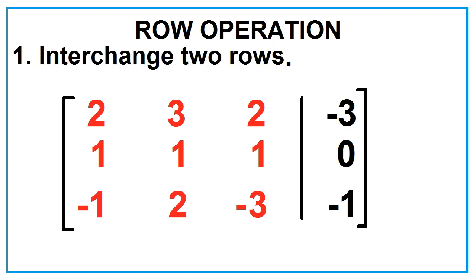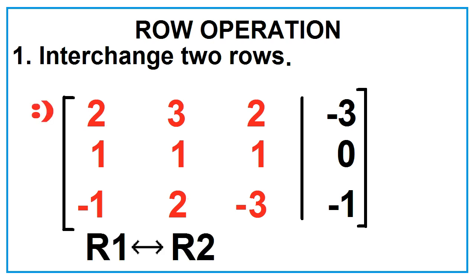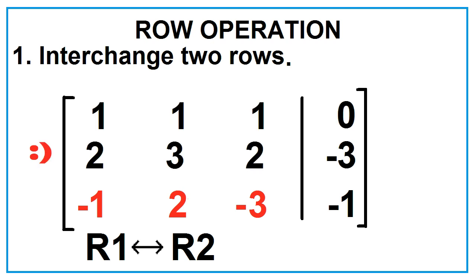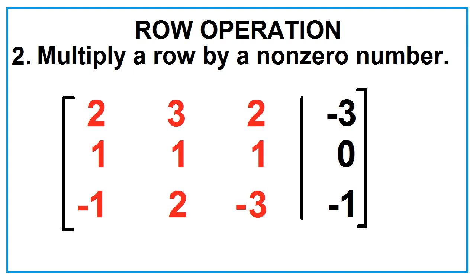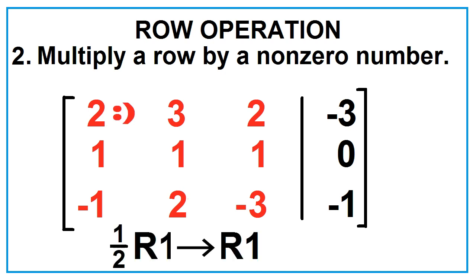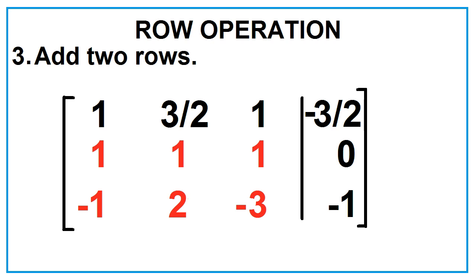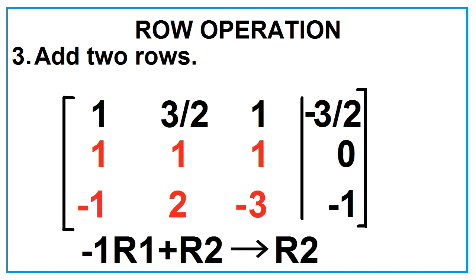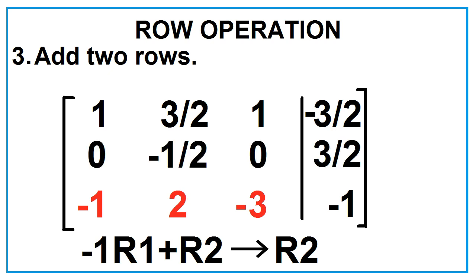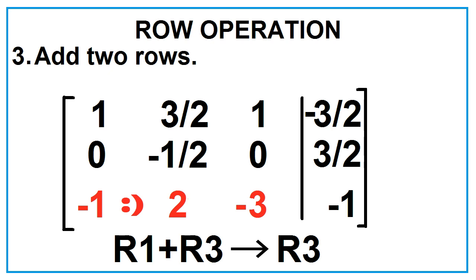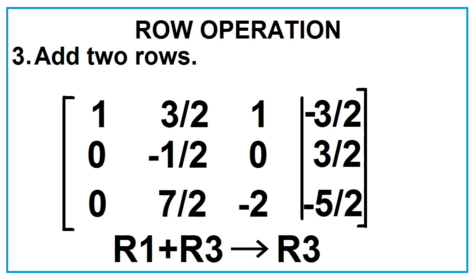Number 1: Interchange two rows. To make the entry of row 1, column 1 equal to 1, interchange row 1 and row 2. Number 2: Multiply a row by a non-zero number. To make row 1, column 1 equal to 1, multiply row 1 by 1 half. Number 3: Add two rows. To make row 2, column 1 equal to 0, replace row 2 with the sum of row 2 and the product of negative 1 and row 1. To make row 3, column 1 equal to 0, replace row 3 with the sum of row 1 and row 3.